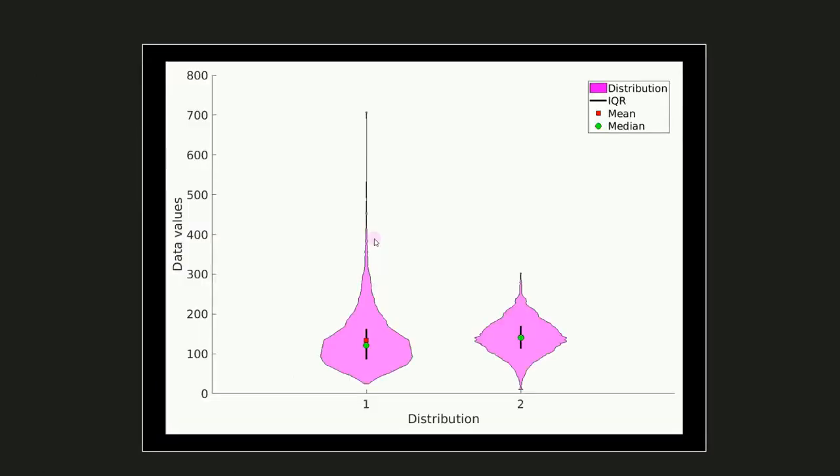One situation where violin plots are really insightful is when comparing multiple distributions. Here you can see two violin plots corresponding to two different distributions. Interestingly, the means and interquartile ranges are not very different between the two distributions, but the shapes of the distributions are really different.